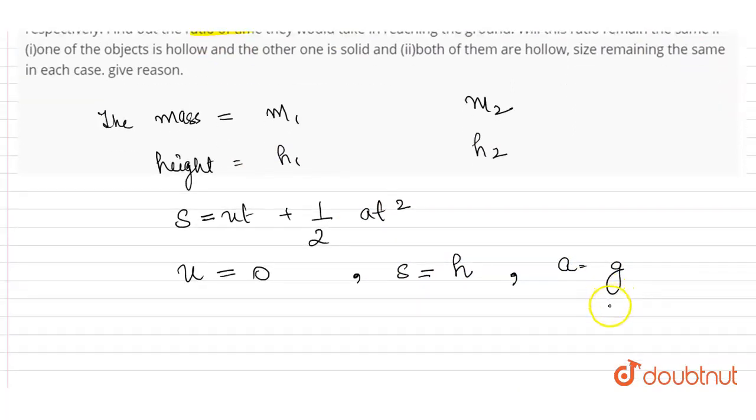Let us place these values here. Now it will be: s will be h is equal to u is zero, so zero times t becomes zero, so this term is gone. We are only left with 1/2 at², which becomes 1/2 gt², where t is the time taken.